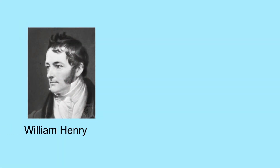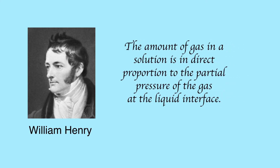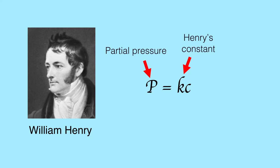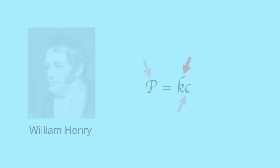In the 1900s, an English physician named William Henry discovered that the amount of gas dissolved in a liquid is directly proportional to the partial pressure of the gas above it. He used the formula P equals KC, where P is the partial pressure of the gas above the liquid, K is known as Henry's constant, and C is the concentration of gas in the solution.